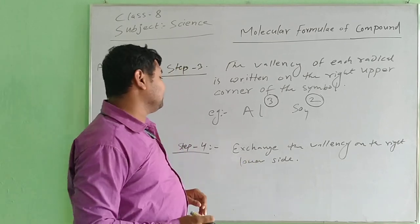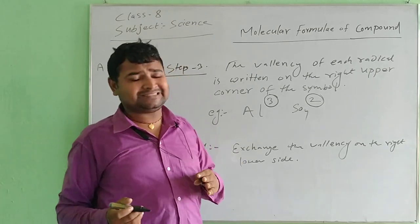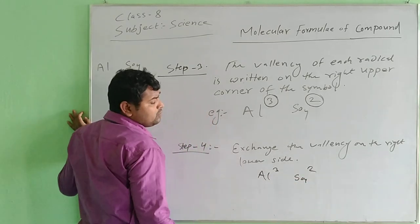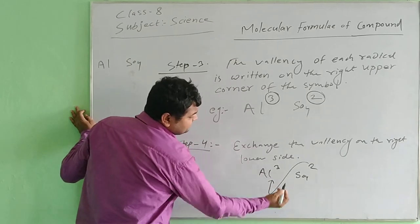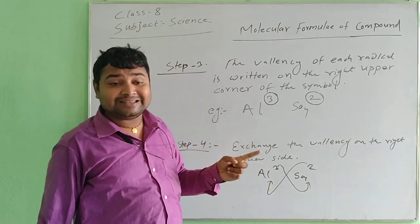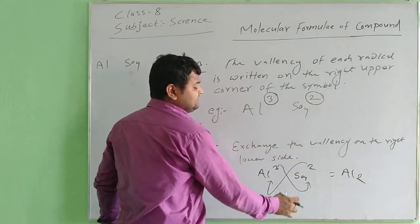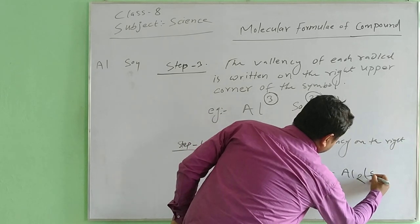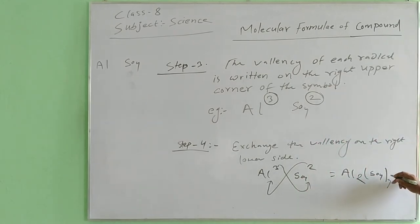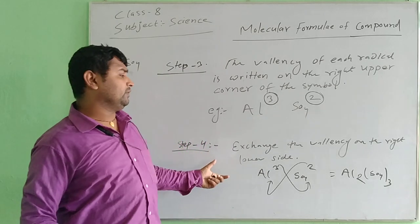Step number four: exchange the valency — move each valency to the lower right side of the other symbol. We exchange at the lower point like this. What we exchange is only the valency. So after exchanging, we get Al2, and the SO4 is kept in brackets with the valency 3 written at the bottom. In this way, we can calculate and find out the molecular formula.